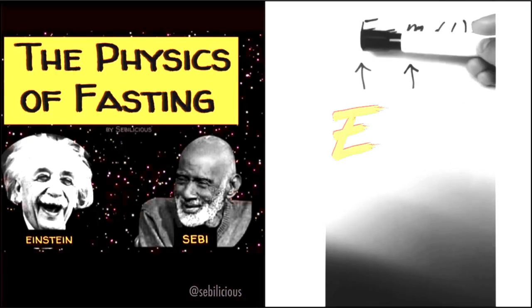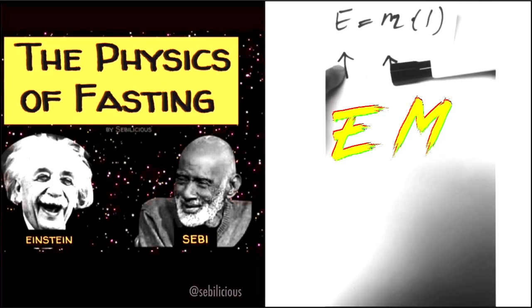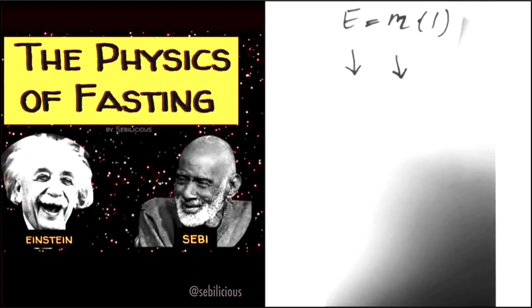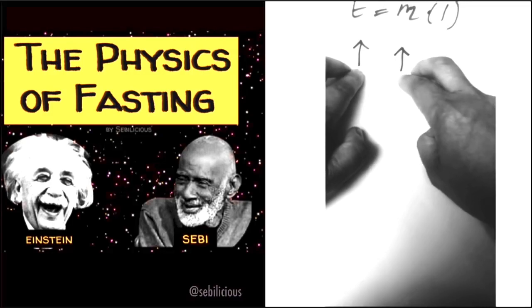So what changes is either energy on this side or mass on this side. So in order to get more energy, you would increase mass, you increase mass, you increase energy. If you decrease mass, then you will decrease energy. So the goal for us is to increase mass.